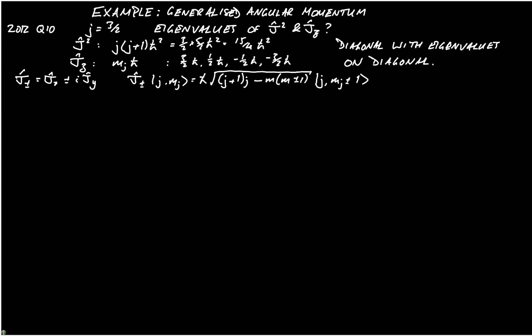And you're asked to find the matrix representation of jx. So we notice that jx is equal to a half j plus plus j minus. That's simple algebra.